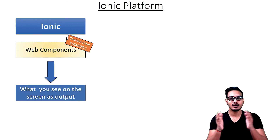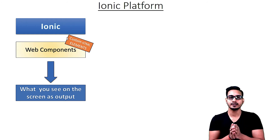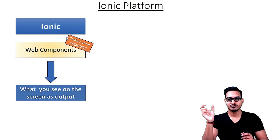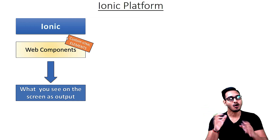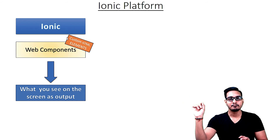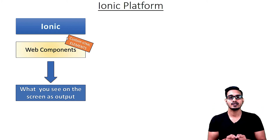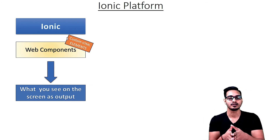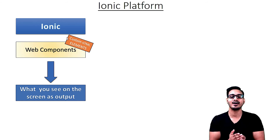The output on the screen is based on the platform. Ionic web components are intelligent enough to adapt to the particular platform automatically. On iOS it gives you the iOS back button with the arrow mark and back text. On Android it detects the platform and gives you the simple Android back button. Maximum complexity is managed by the Ionic team, making our development much easier.